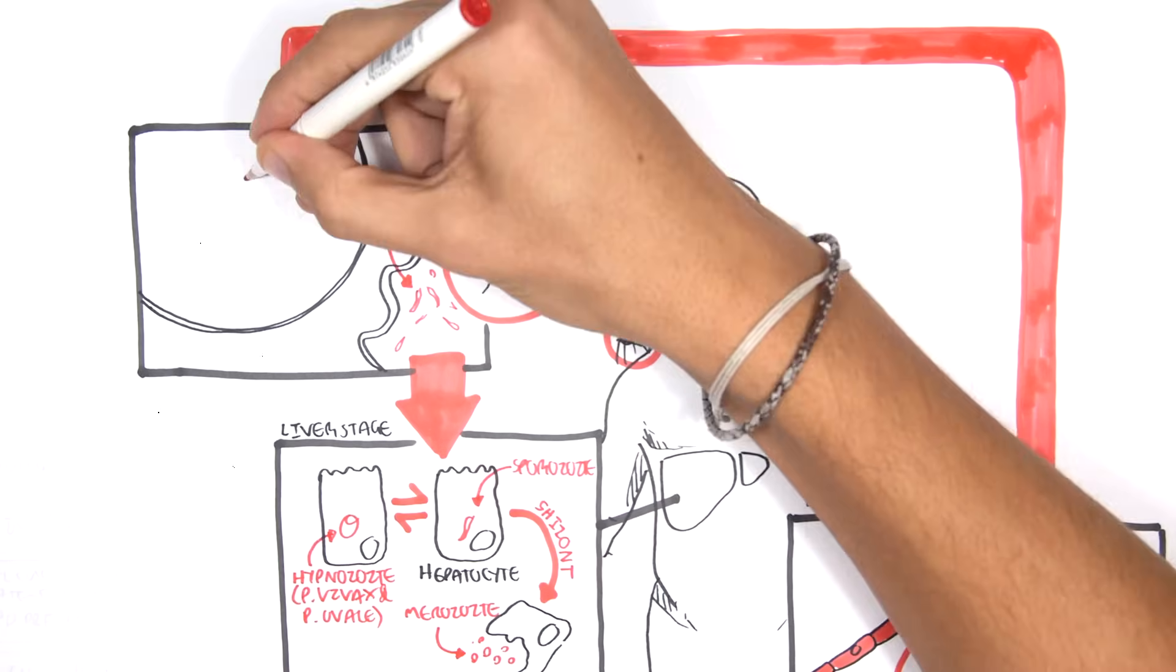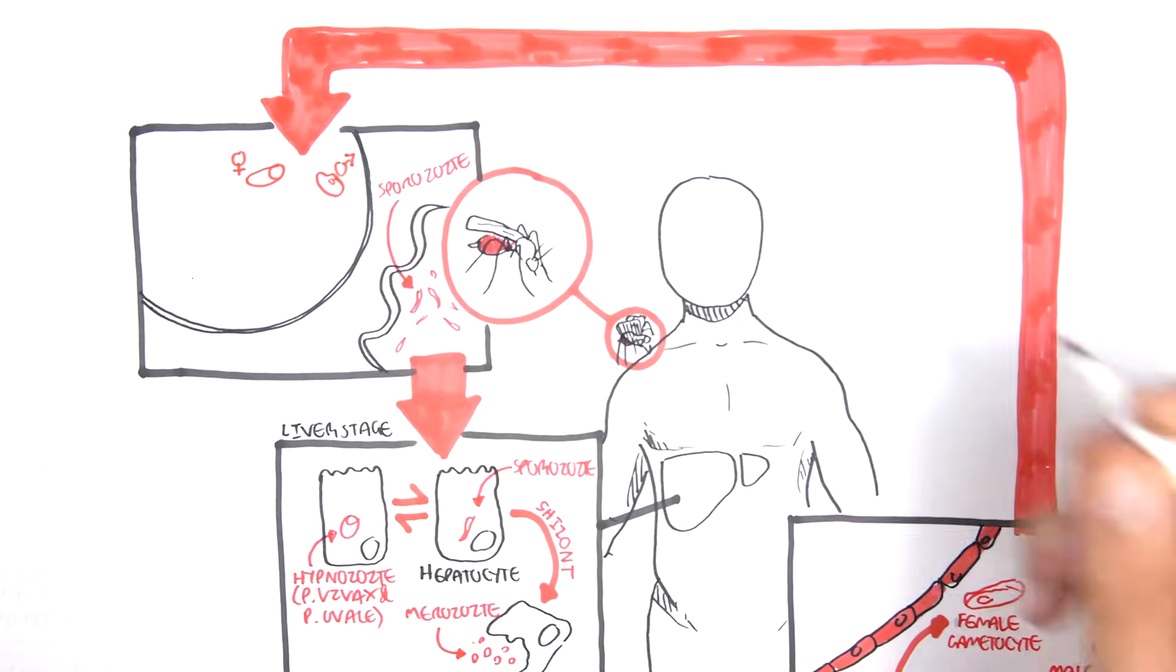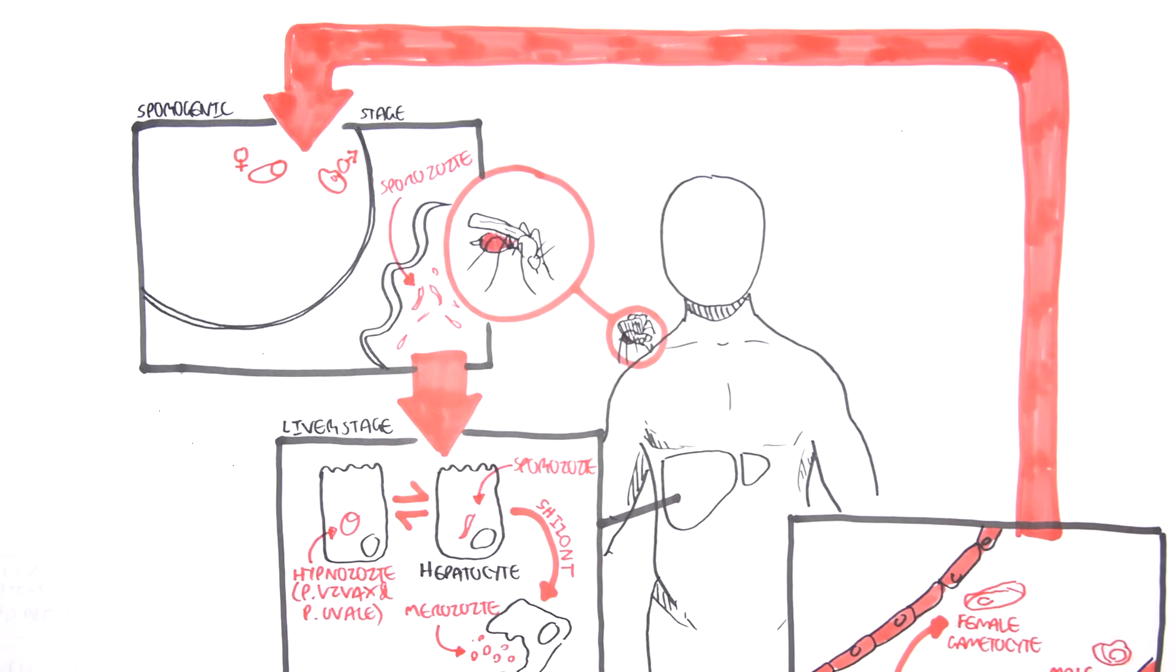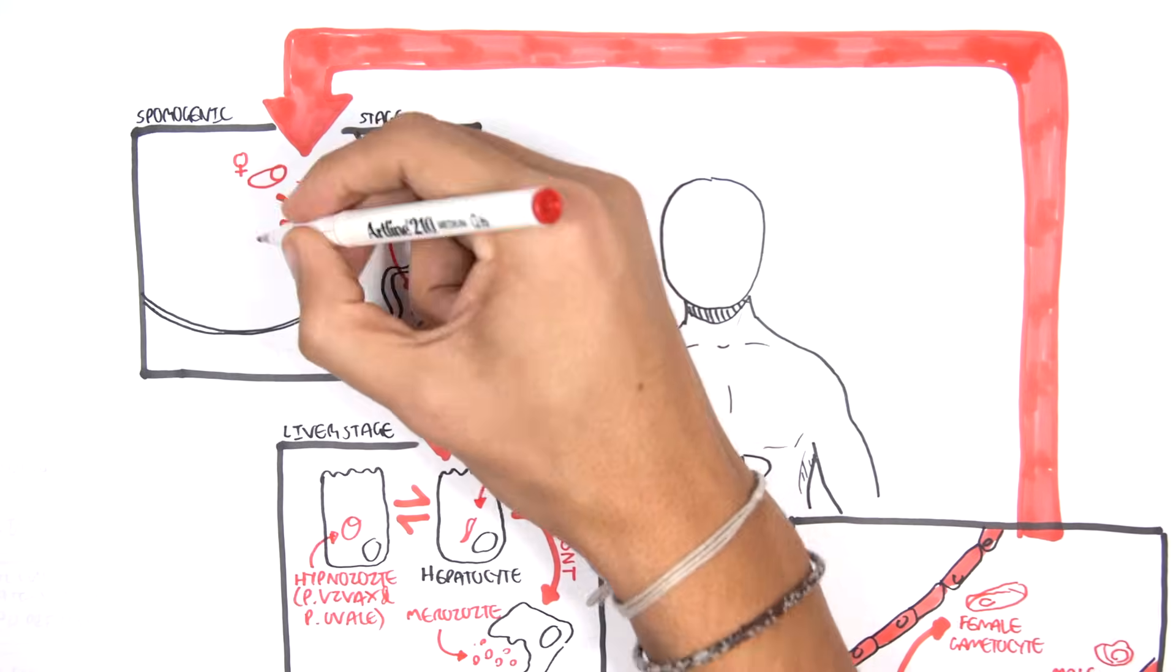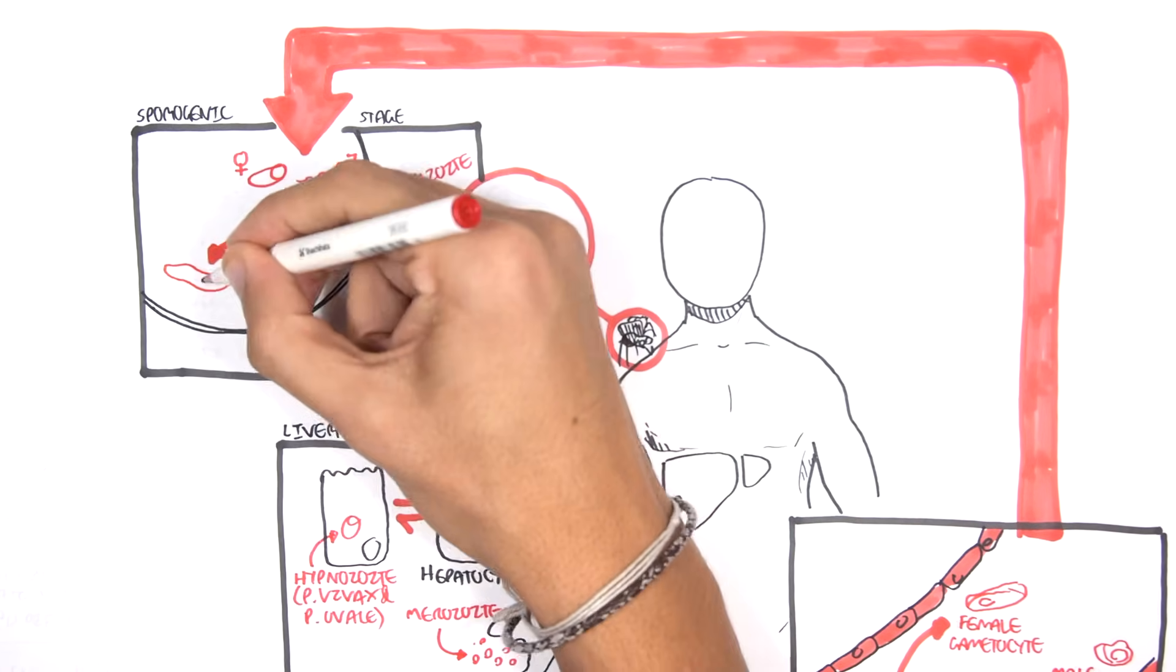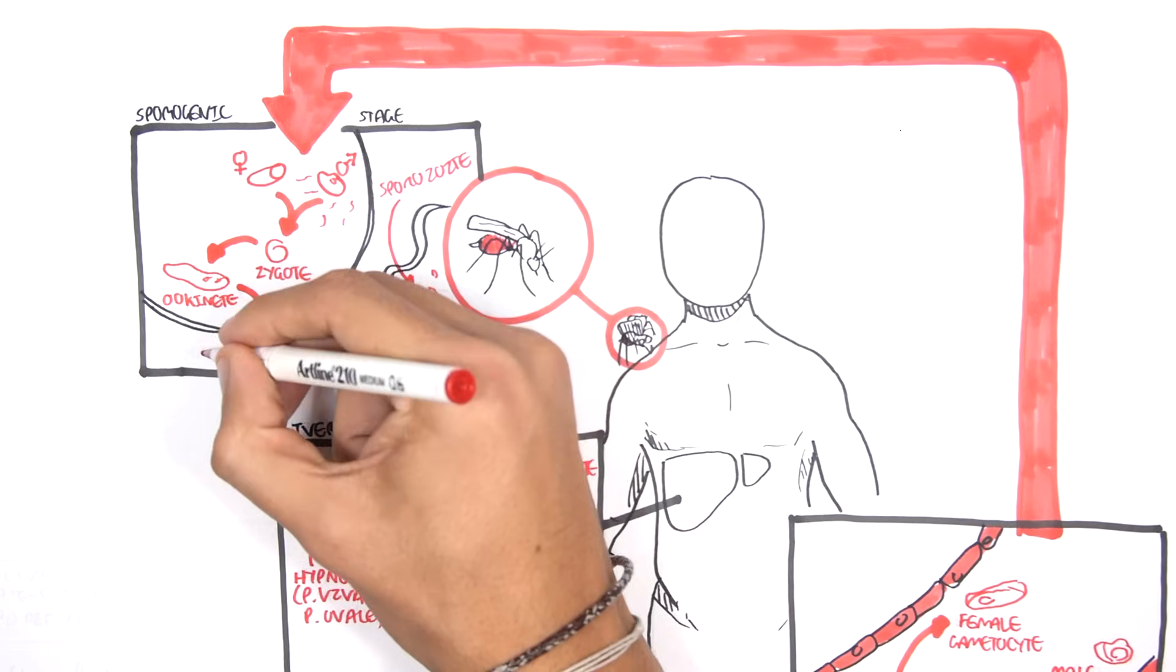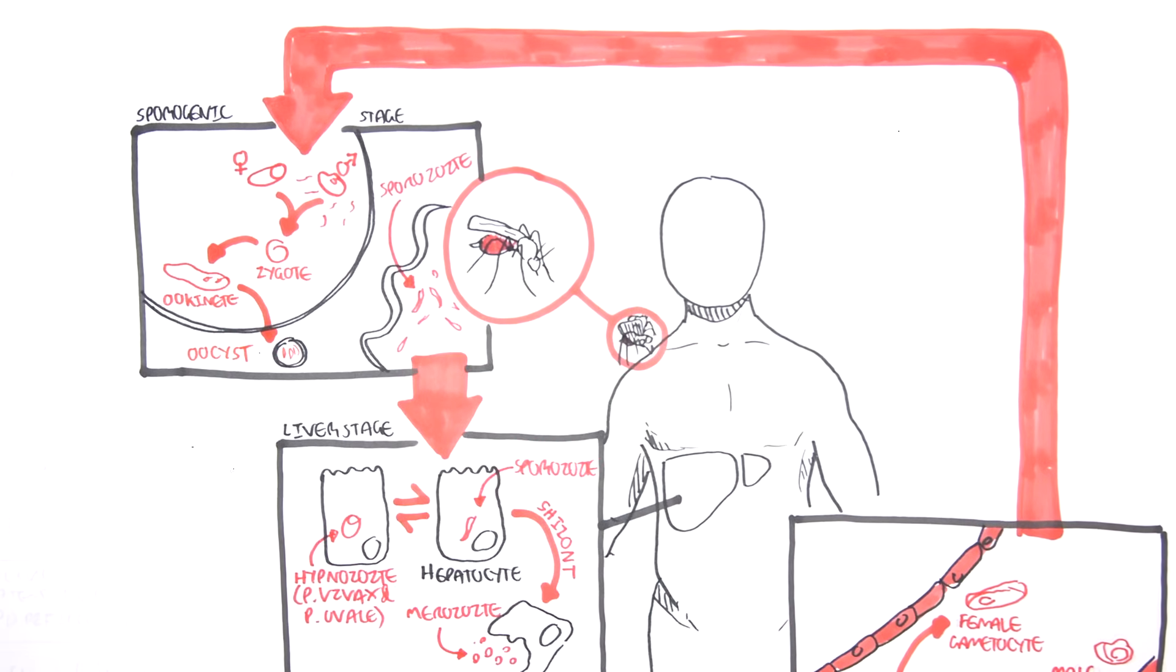In the stomach of the mosquito, the male and female gametocytes, which have just been taken in, can form a zygote. The zygote will mature into an ookinete, then be released by the stomach as an oocyst.